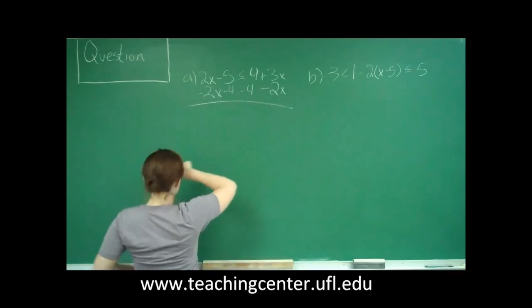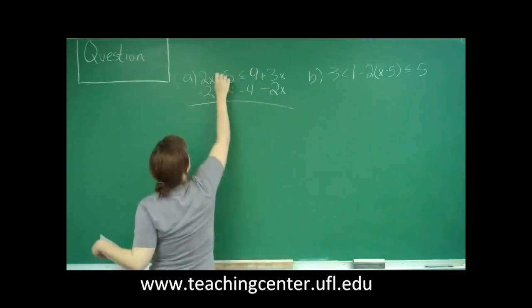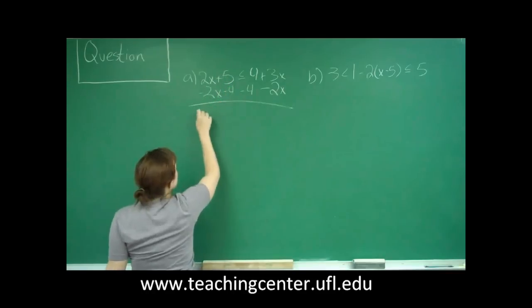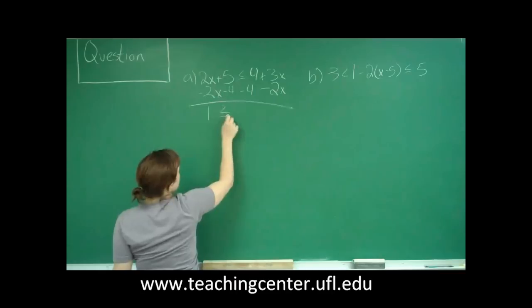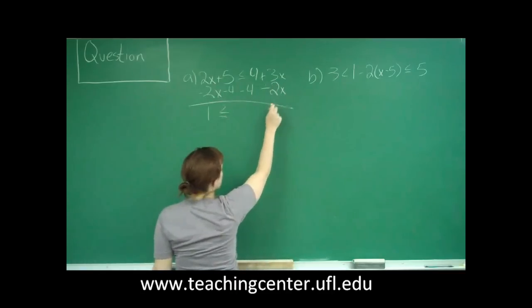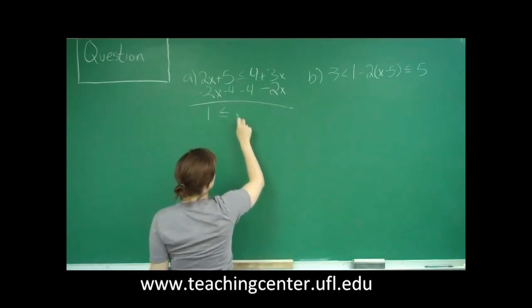So I'm going to subtract 2x from both sides, and I'm going to subtract 4 from both sides. So that would give me, sorry, this is a plus. 5 minus 4, which is 1, is less than or equal to 3x minus 2x, which is just x.